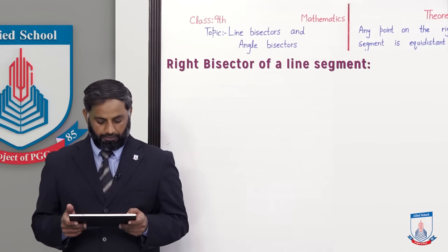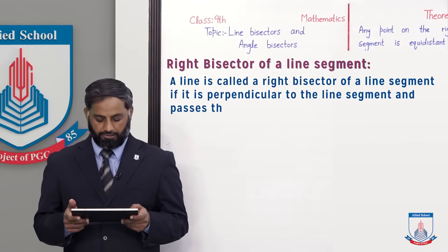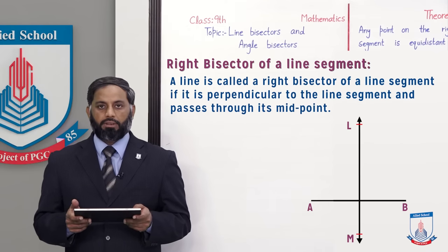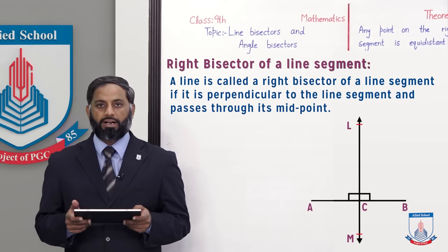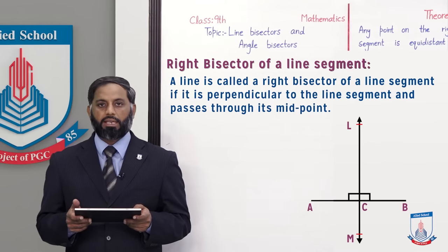Let's understand the definition of right bisector of a line segment. A line is called a right bisector of a line segment if it is perpendicular to the line segment and passes through its midpoint. Let's draw a line segment AB. Line LM is perpendicular to line segment AB and intersects it at point C, dividing it into two equal parts.